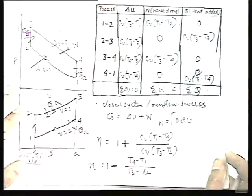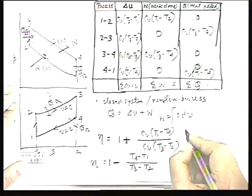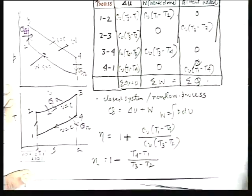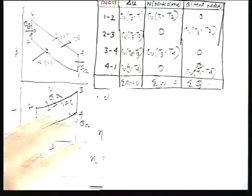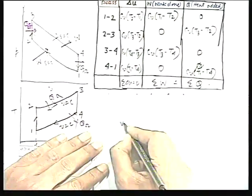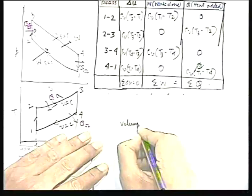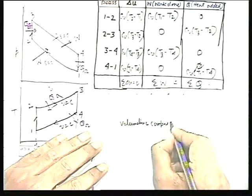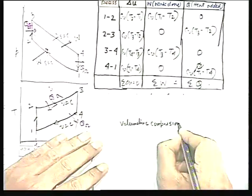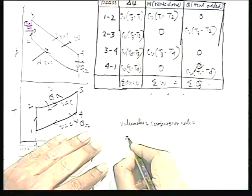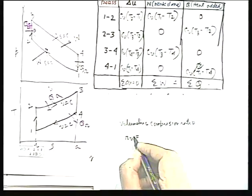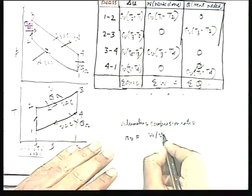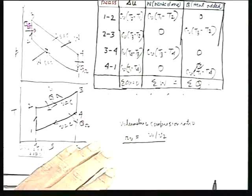In this cycle, one very important parameter is defined as the volumetric compression ratio, denoted as Rv, which is equal to the ratio of the maximum volume to the minimum volume — that is, V1 by V2.